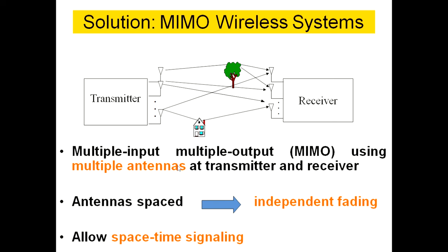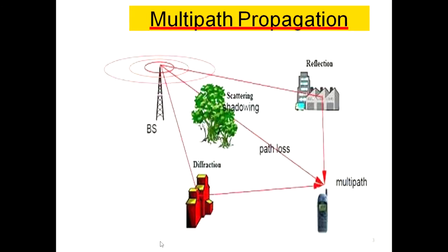MIMO — Multiple Input Multiple Output — uses multiple antennas at both transmitter and receiver. The antennas are spaced at a particular distance in order to avoid the fading effect, and it allows space-time signaling.